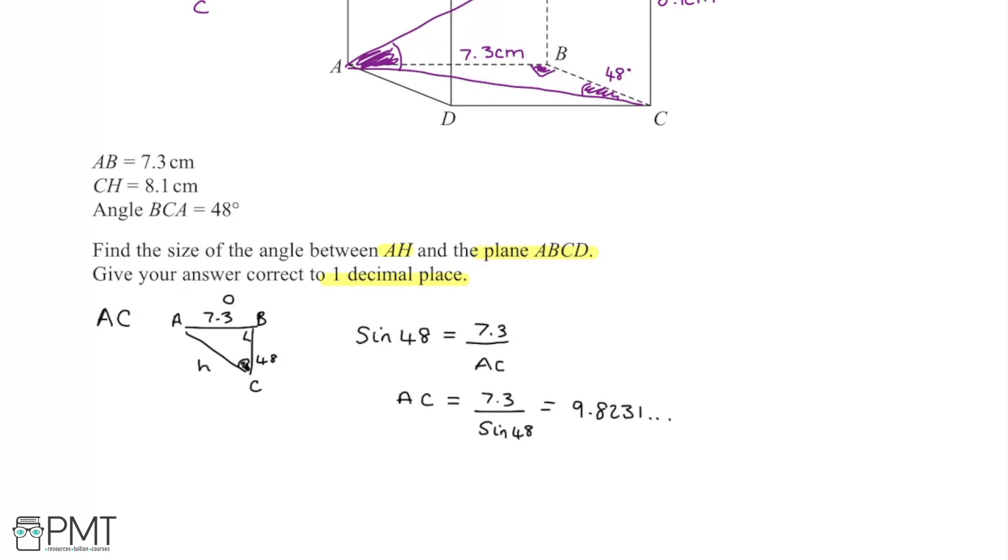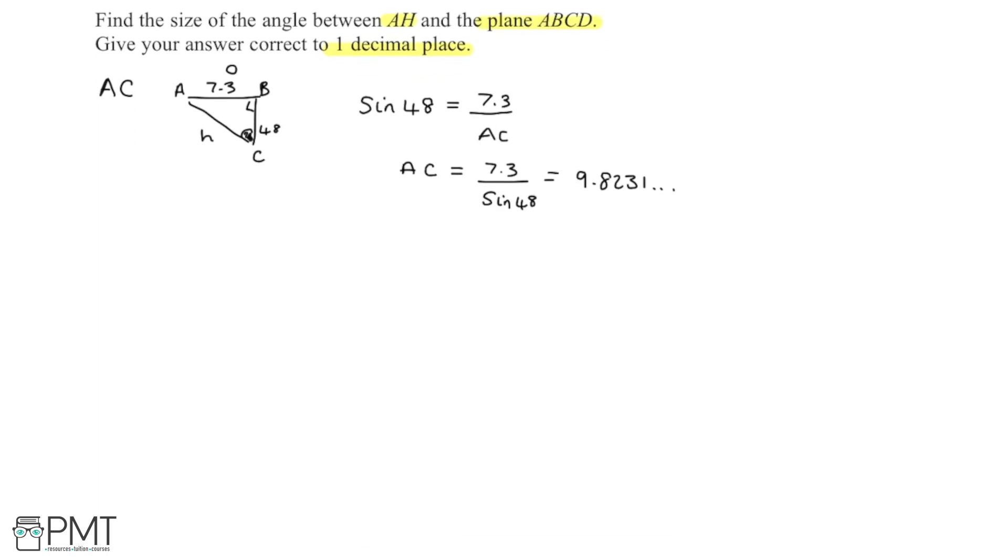Now that I've got the length AC, I can now use it to work out this angle that we're looking to calculate. So I can draw out the other triangle that we're working with, the triangle AHC. We're looking to calculate this angle here. We know that CH is 8.1 centimeters, and we now know that AC is 9.8231, but we'd use the exact value in our calculators there.